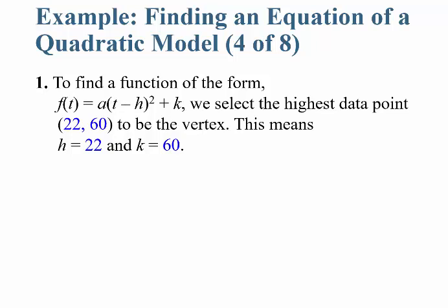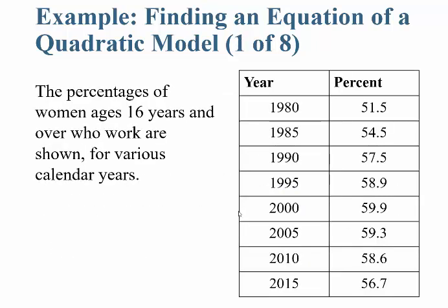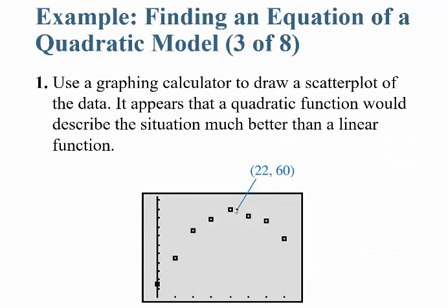Next, find the equation. What you'd do is pick a point that looks like it's going to be the vertex. At 20 years since 1980 you're close to 60%, so estimate that at about 22 years since 1980, 60% of women were working.